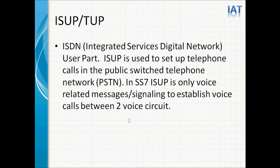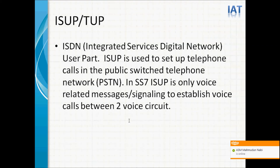INAP is the application layer protocol to communicate with the Service Control Point. ISDN means Integrated Services Digital Network. ISUP is used to set up telephone calls in the public switched telephone network. In SS7, ISUP handles only voice-related signaling to establish voice calls between two voice circuits. When a call is set up, several telephone exchanges could be involved across international boundaries. A switch will signal call-related information like the calling party number to the next switch using ISUP messages. Before establishing the call, all routing-related messages are communicated using MAP between HLR and MSC.